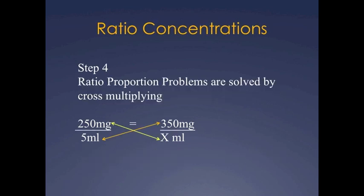Step four, ratio proportion problems are solved by cross multiplying. So in this case you're going to multiply 250 milligrams times x ml, and 5ml times 350 milligrams.